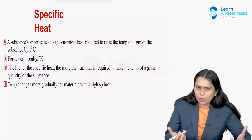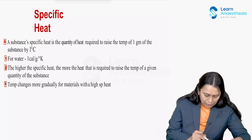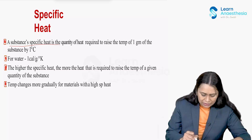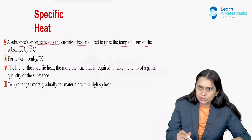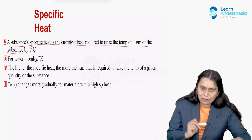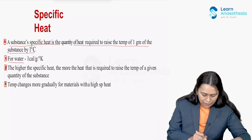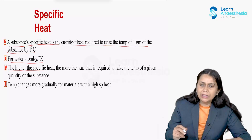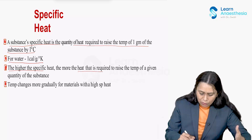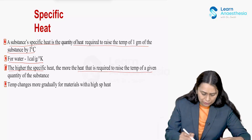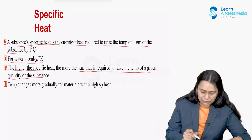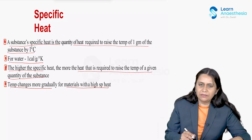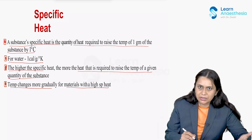Then there is specific heat — a definition we need to know. A substance's specific heat is the quantity of heat required to raise the temperature of one gram of the substance by one degree Celsius. For water, it is one calorie per gram per degree increase in temperature. The higher the specific heat, the more heat required to raise the temperature of a given quantity of substance. Temperature changes more gradually for materials with high specific heat.